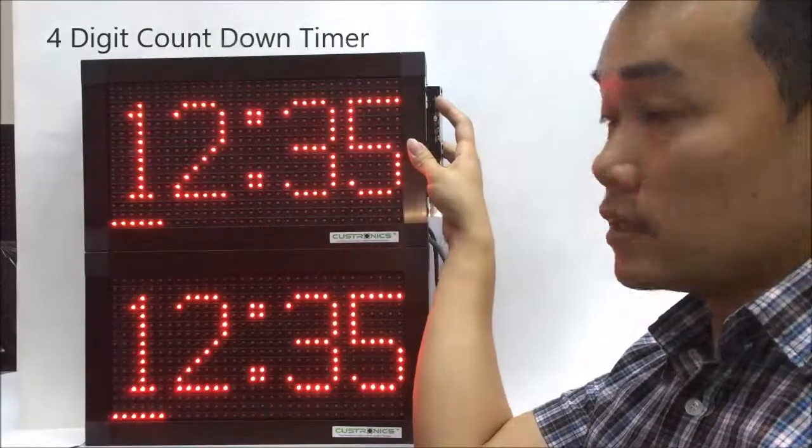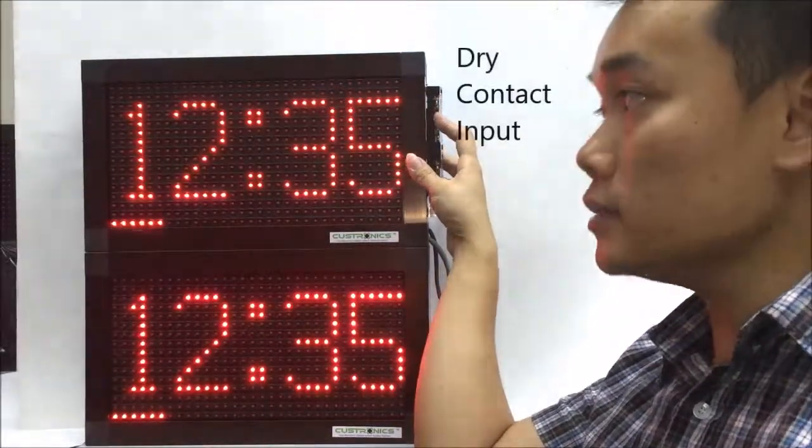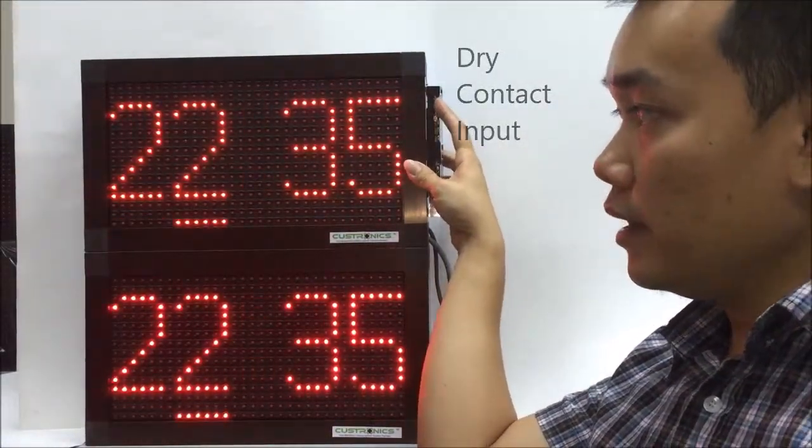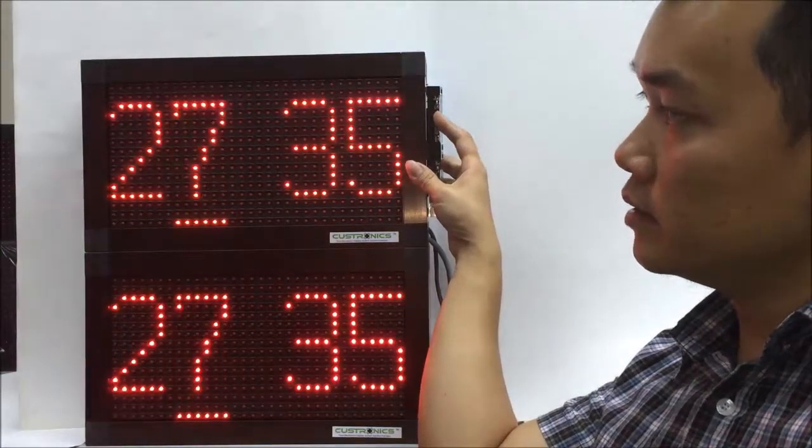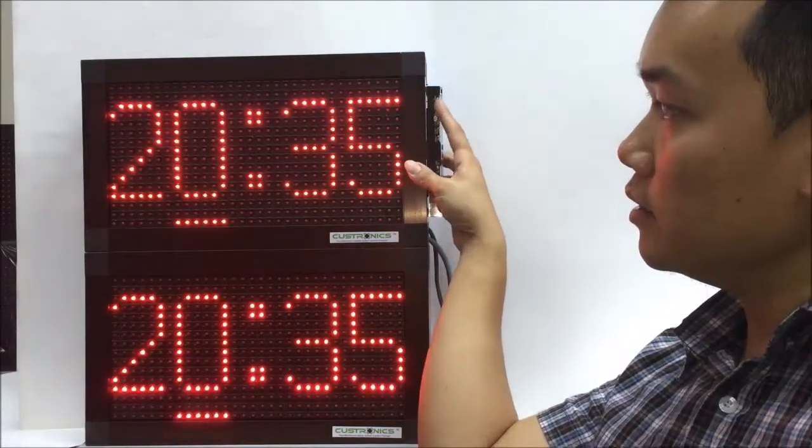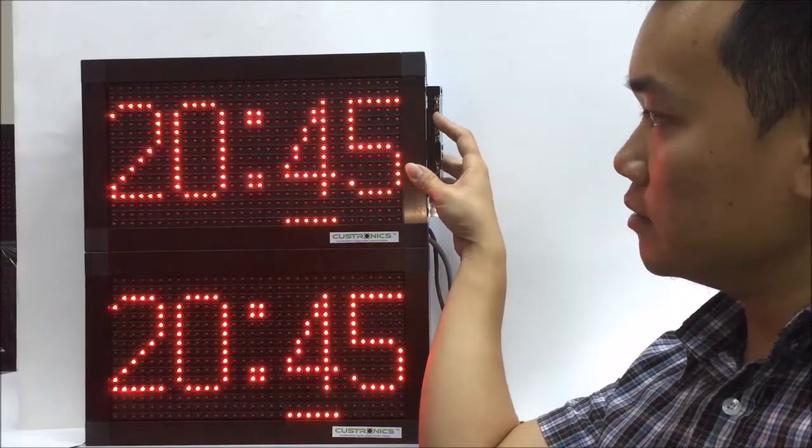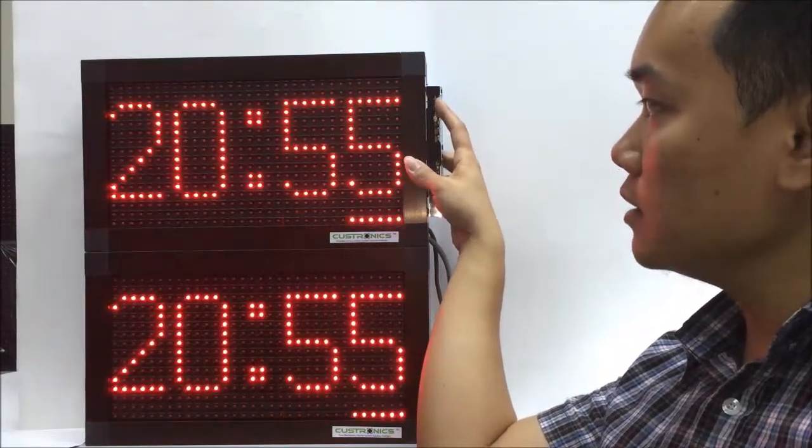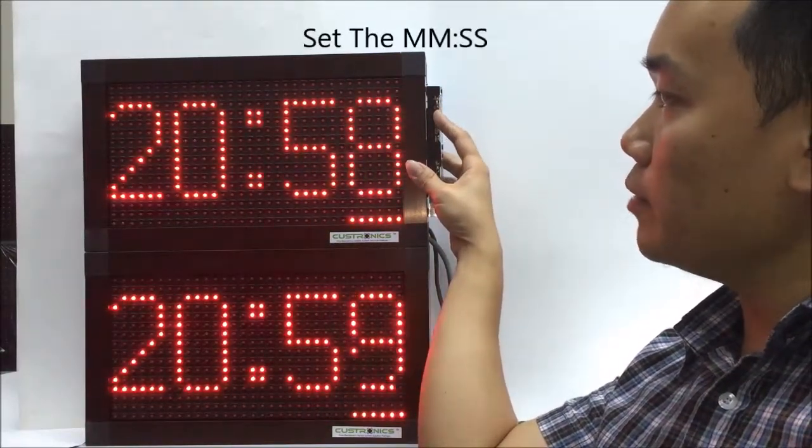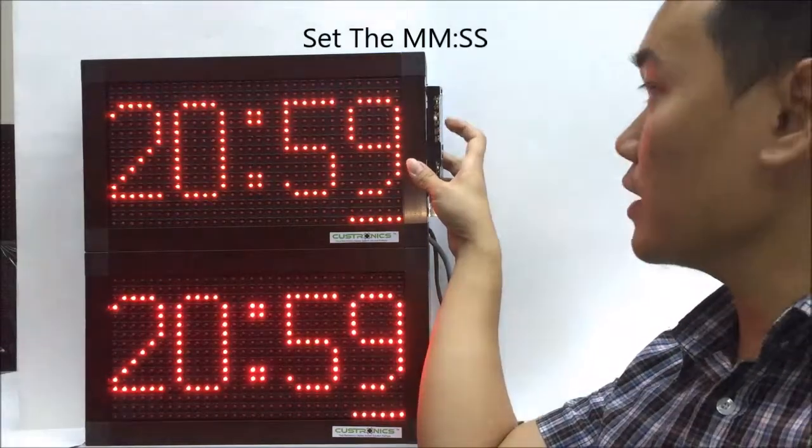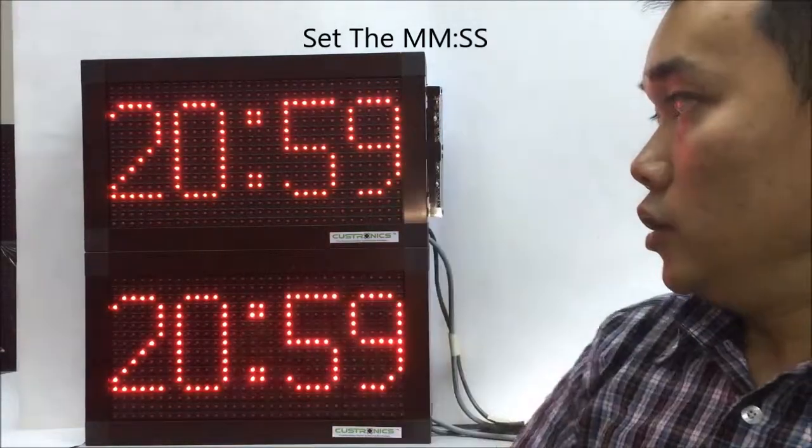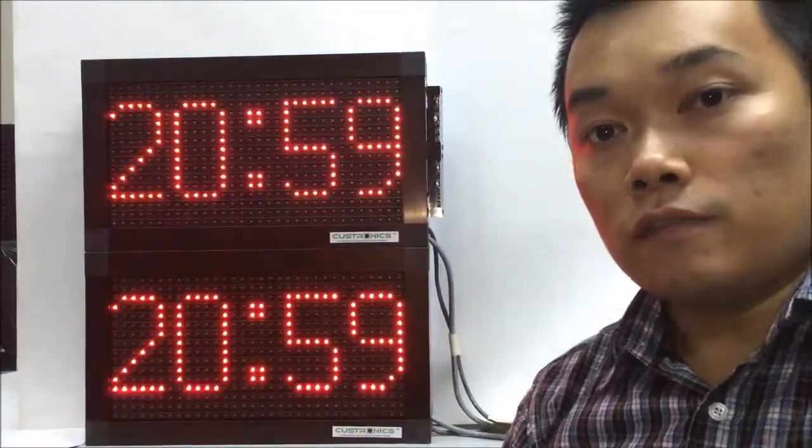We would like to set the time that the user wants. Next, for the seconds, we can set it to 59. Okay, done. So the time we set is 20 minutes 59 seconds.